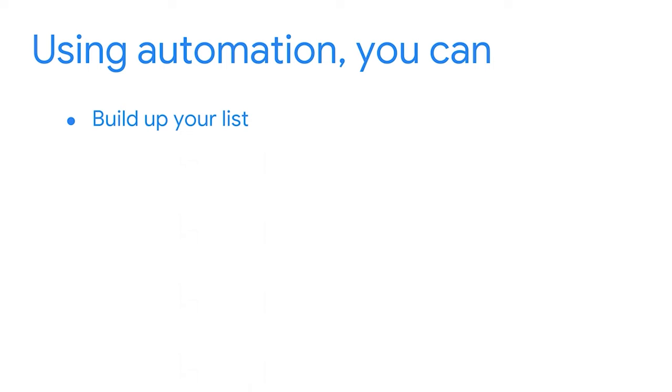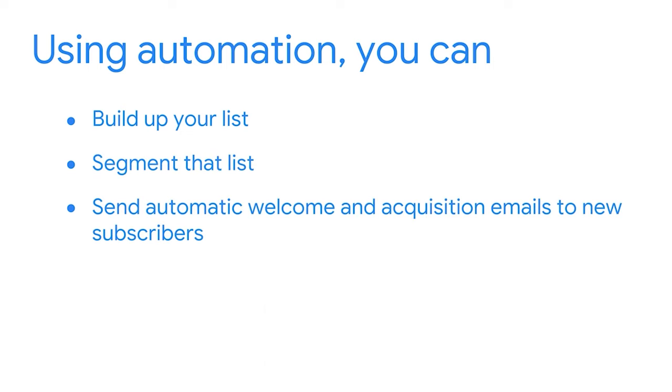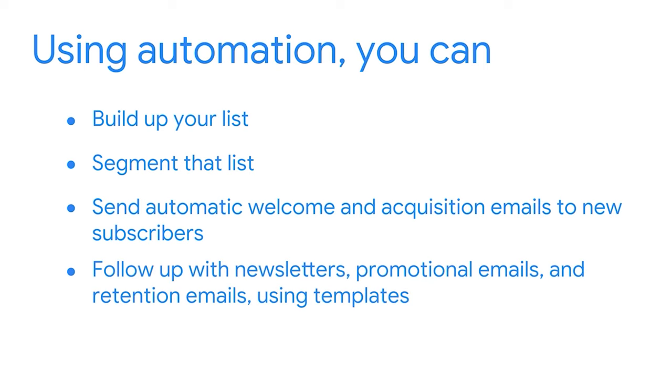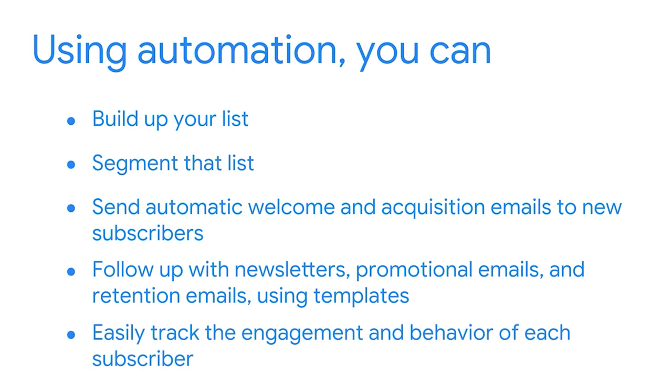Automation has positively affected our lives in countless ways — whether it's driving a car instead of walking, managing your money using software rather than manually balancing your checkbook, or washing your clothes in a machine rather than by hand. Automation just makes things simpler, and it's the same with email marketing. As a digital marketer, you'll absolutely want to become acquainted with these automation tools because they're integral to the success of your marketing campaign. That's largely due to the fact that marketing automation tools ensure your emails don't lose their personal touch. Using automation, you can efficiently build up your list, segment that list, send automatic welcome and acquisition emails to new subscribers, follow up with newsletters, promotional emails, and retention emails using templates, and easily track the engagement and behavior of each subscriber.